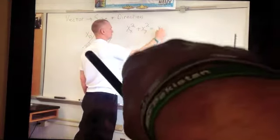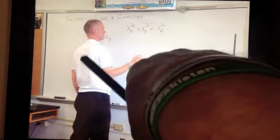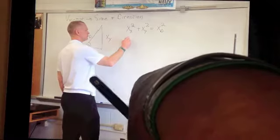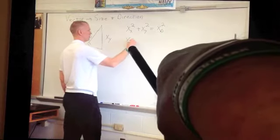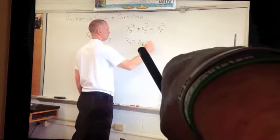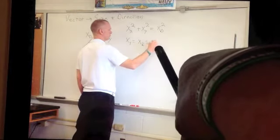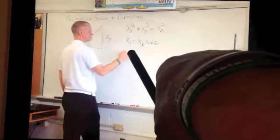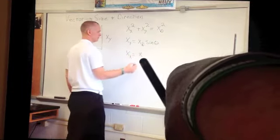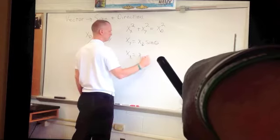From our trig, if you remember, if you multiply the hypotenuse times the sine of the angle, you get the y. The sine goes with the y. So my xy equals my xd times sine of theta. My distance in the x direction equals my hypotenuse distance times the cosine of the angle.